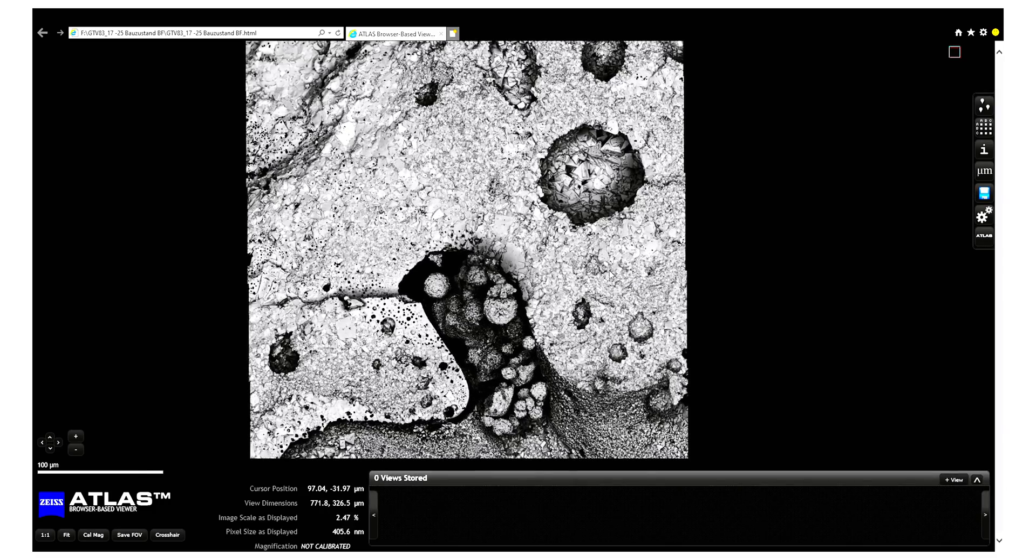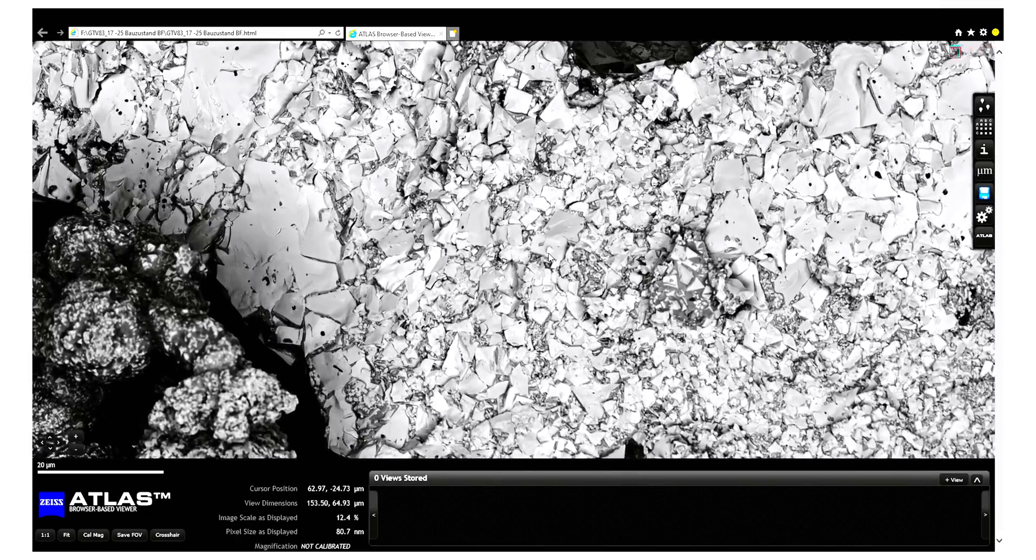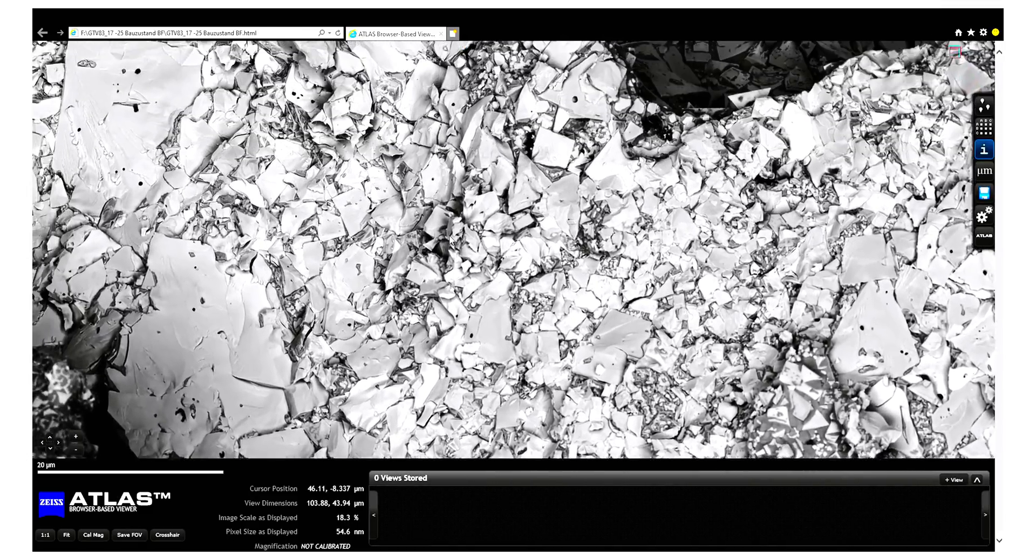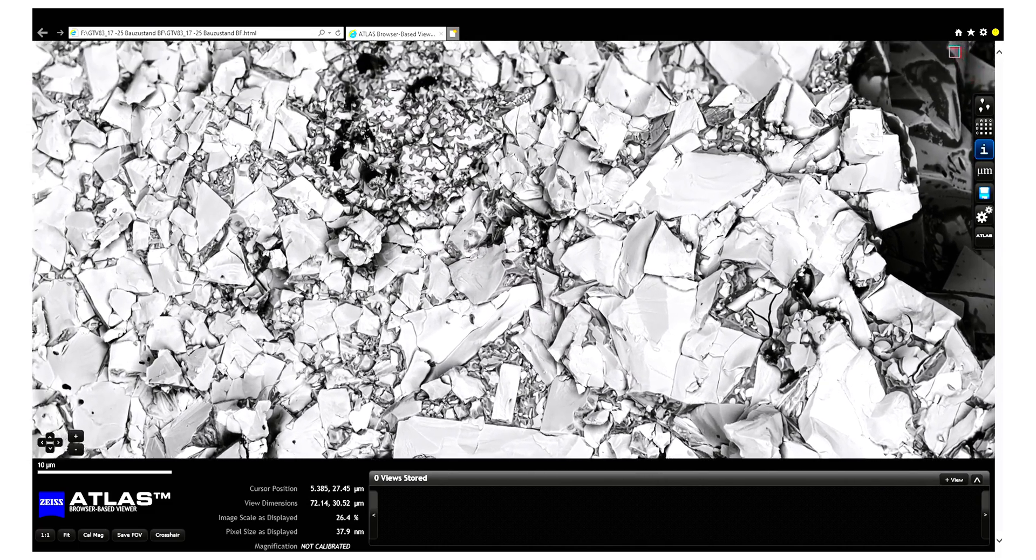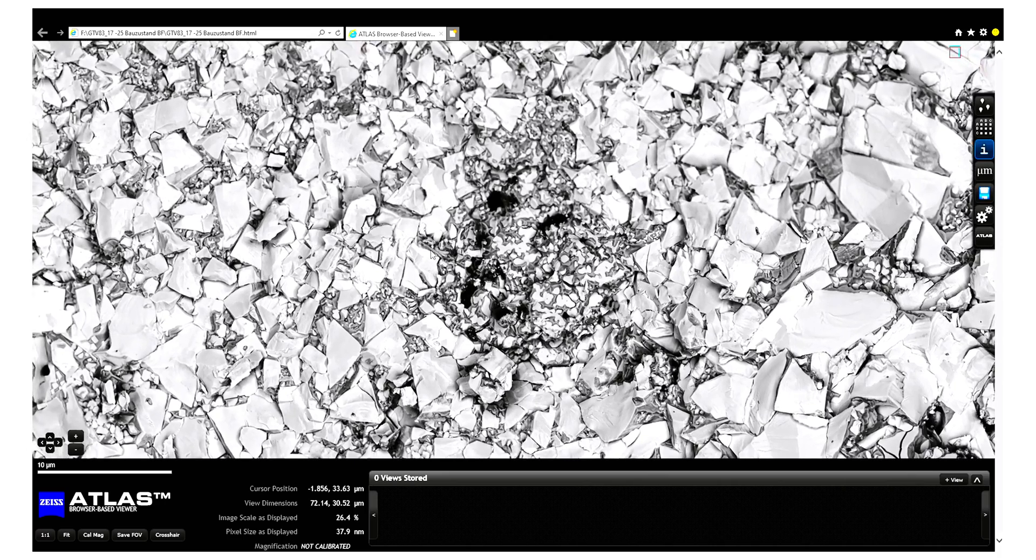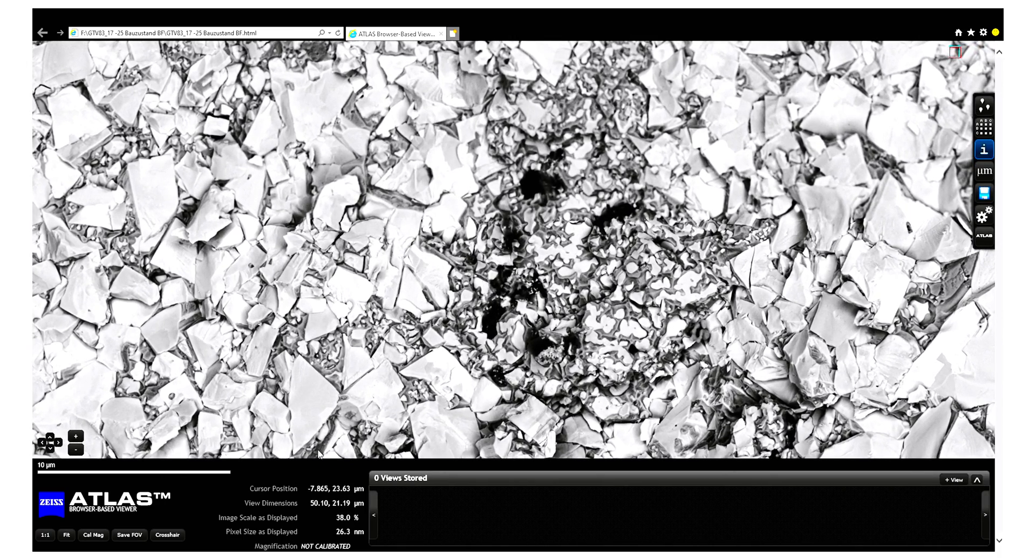And you can just zoom in like you know it perhaps from Google Maps and see the fracture surface here in this case of a tungsten carbide hard metal. So what's the scale of what we're looking at in here?